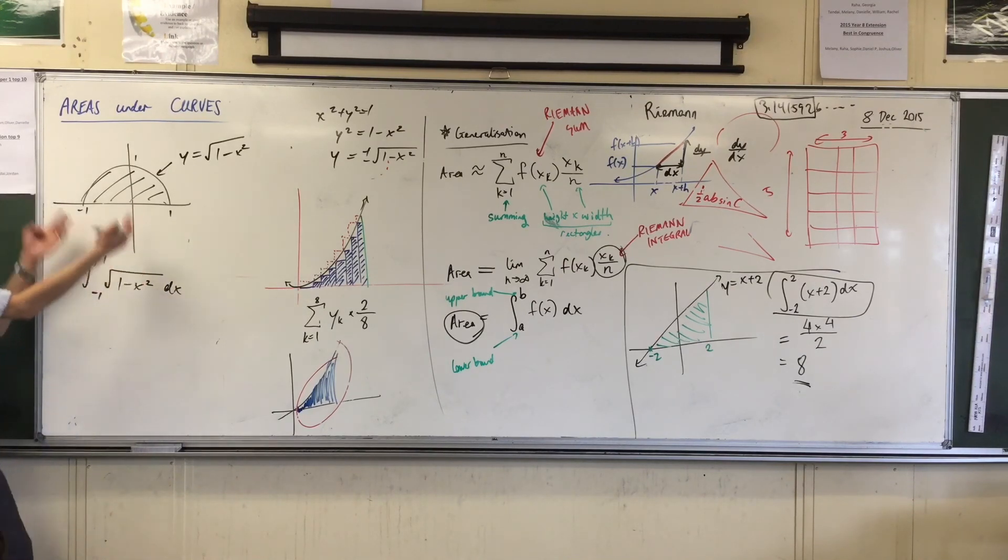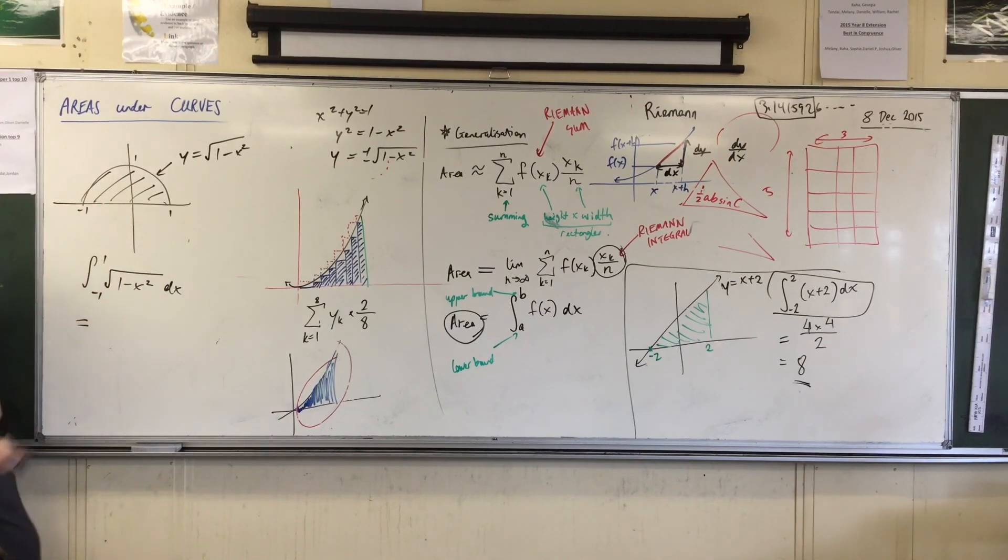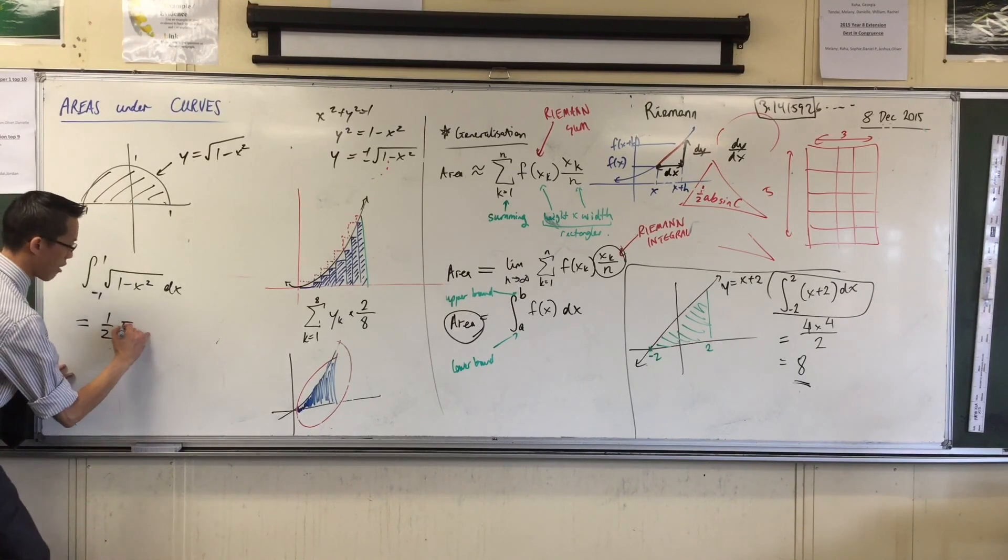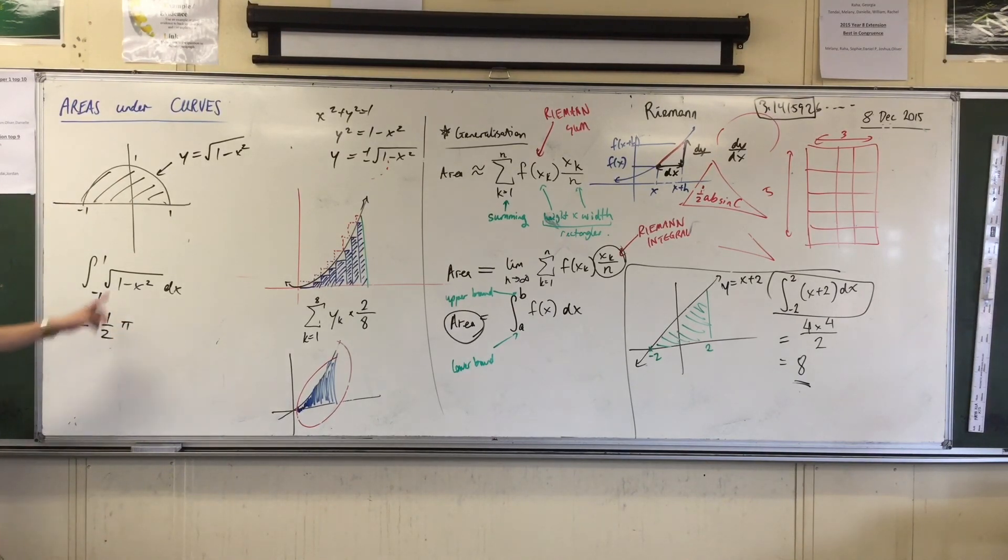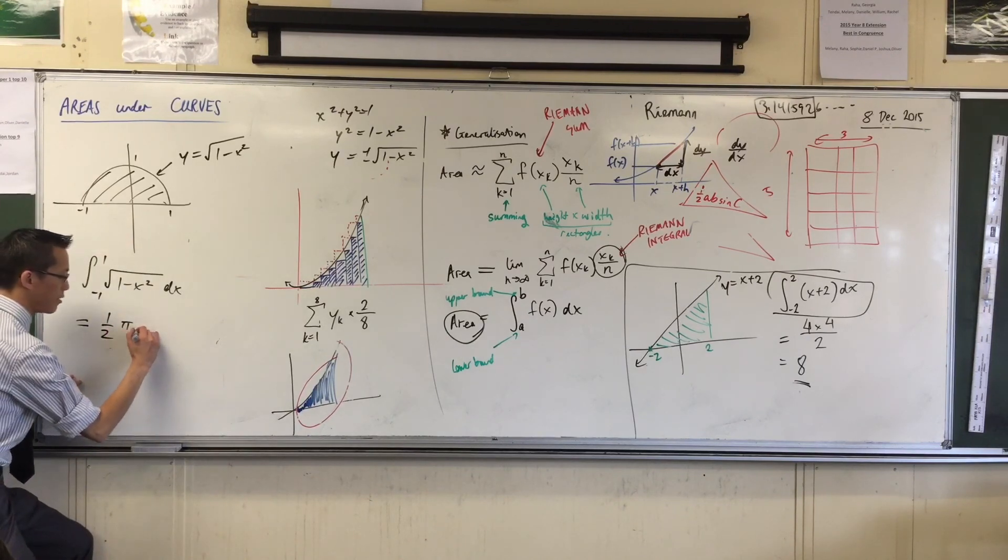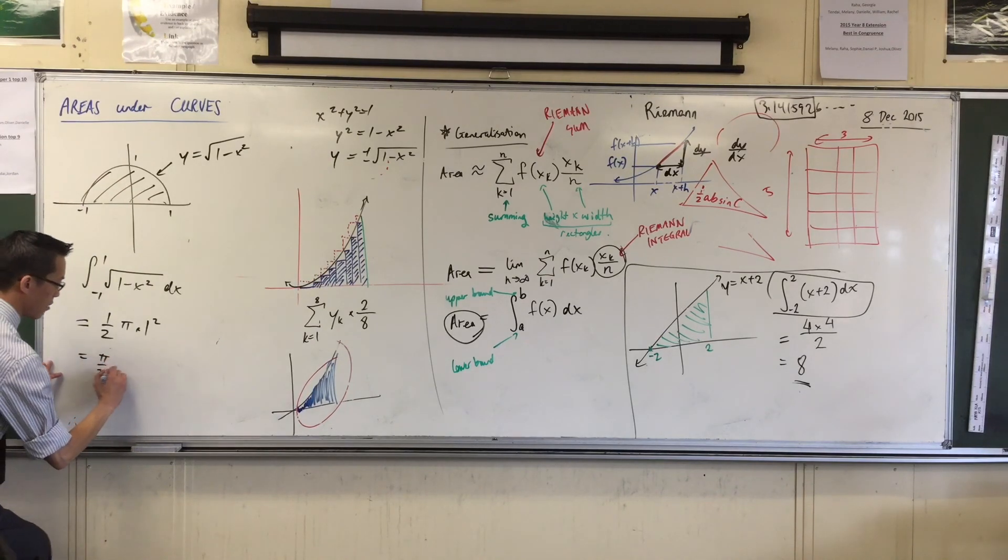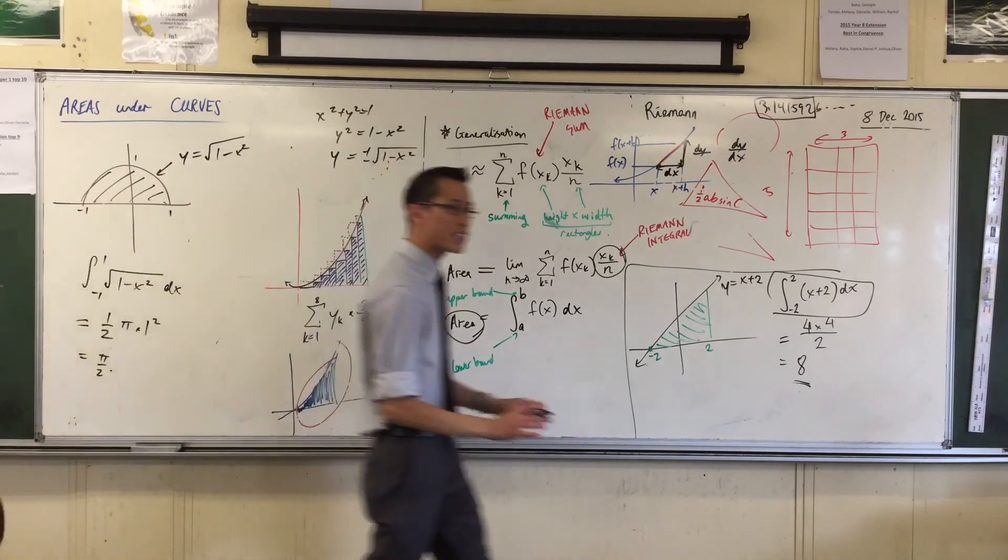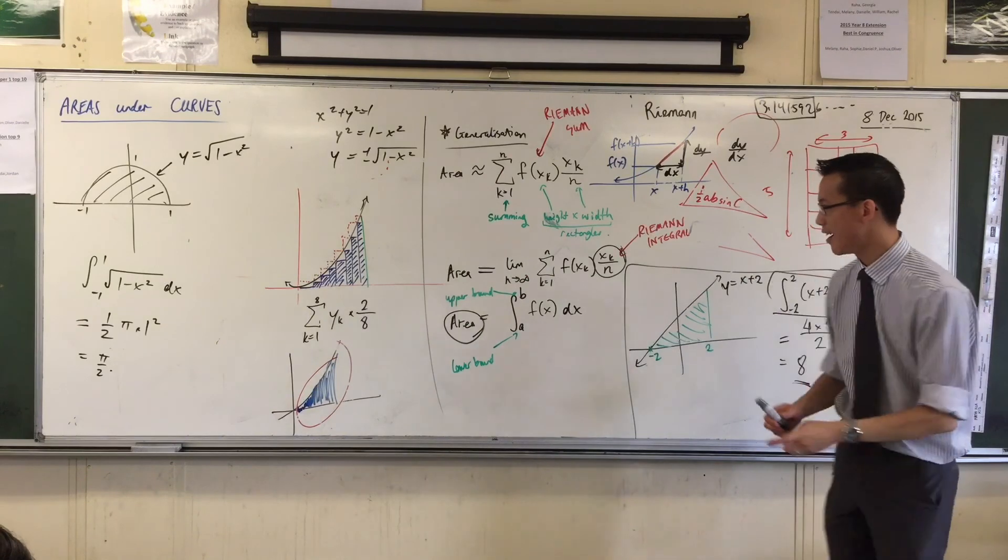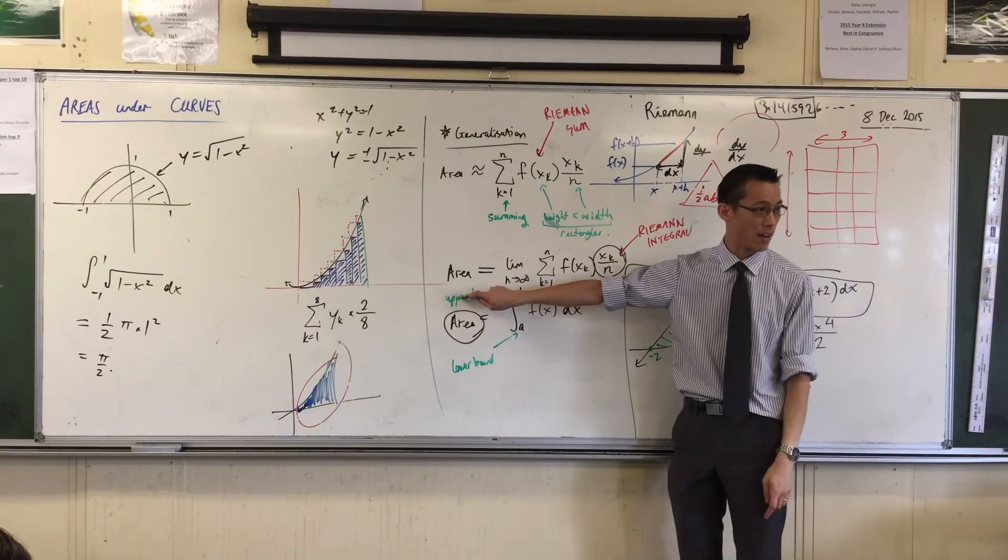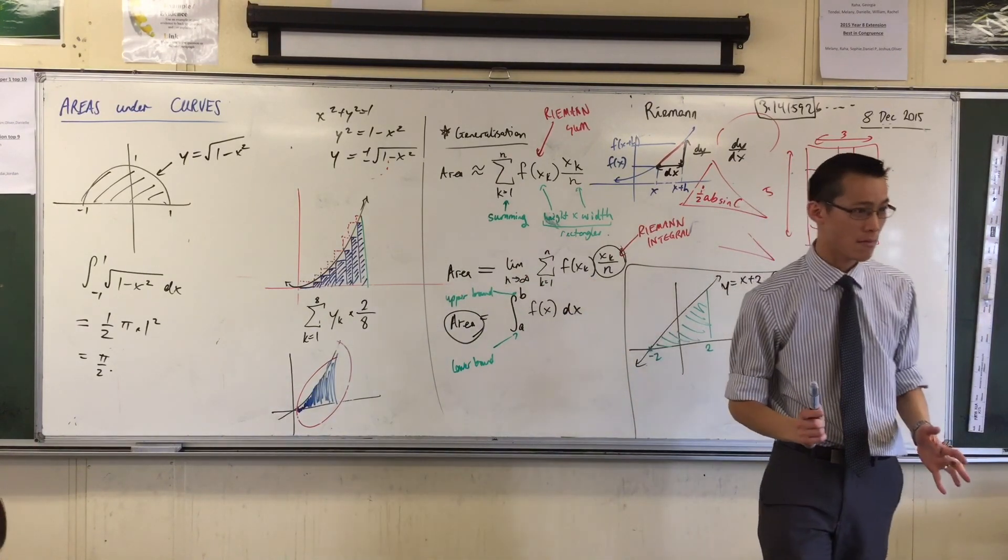Now, it's just an area, so I know what the area of a semicircle is equal to. It's half the area of a circle, which is pi r squared. So this integral, and this area, is pi over 2. It's not a crazy idea. It's just area. That's what integration is doing.